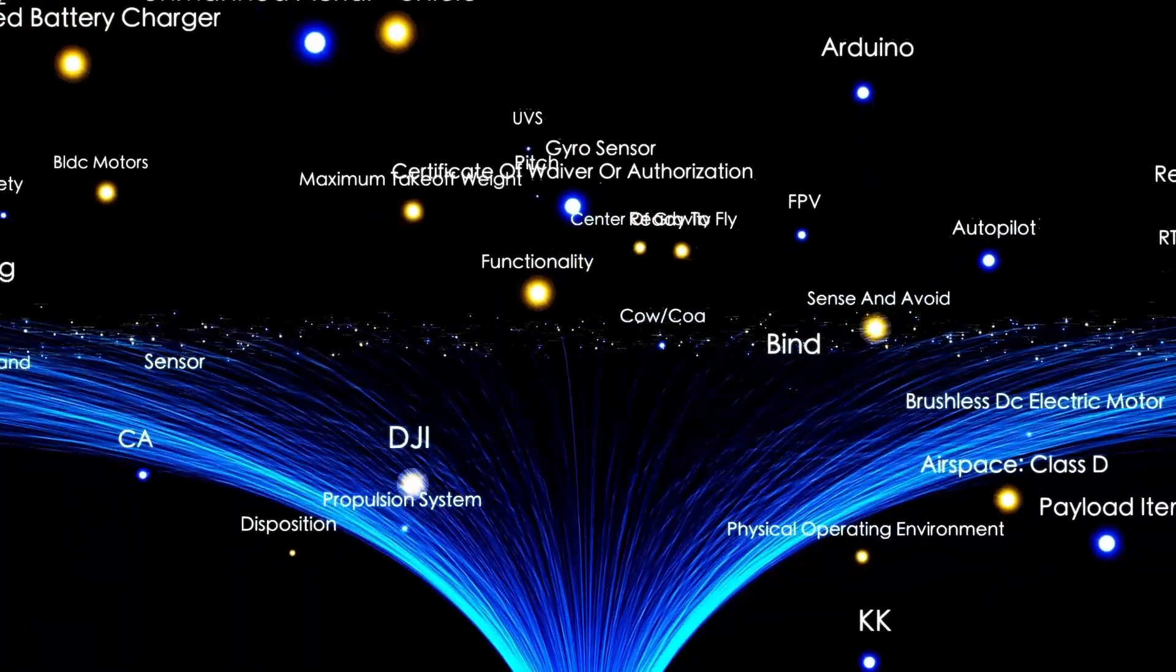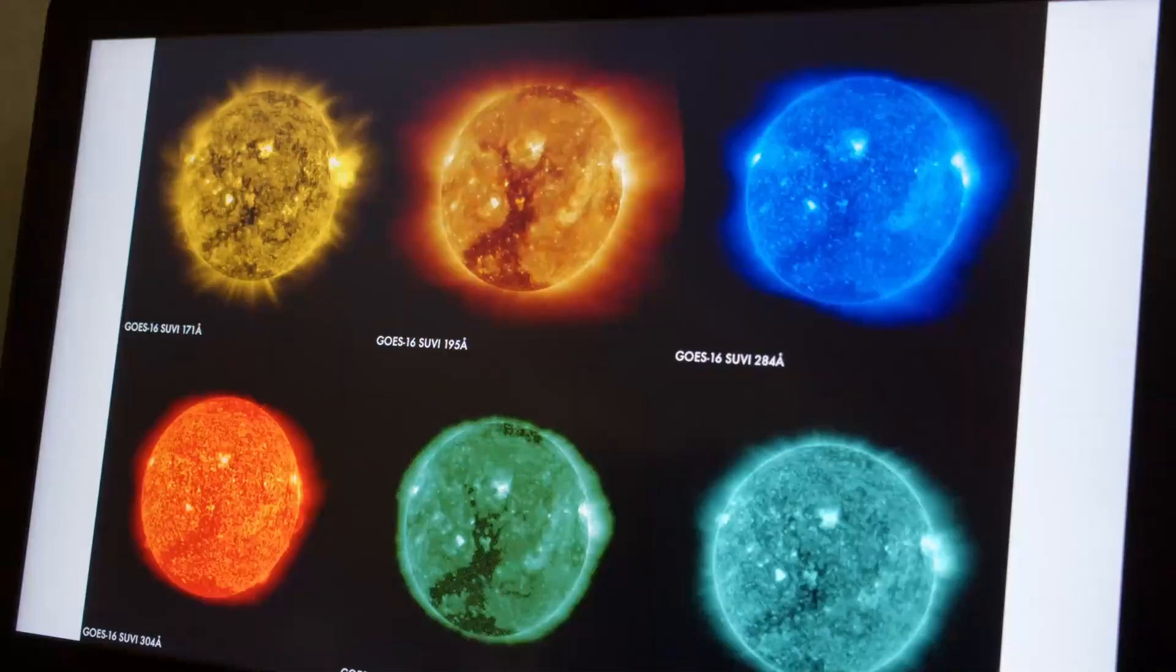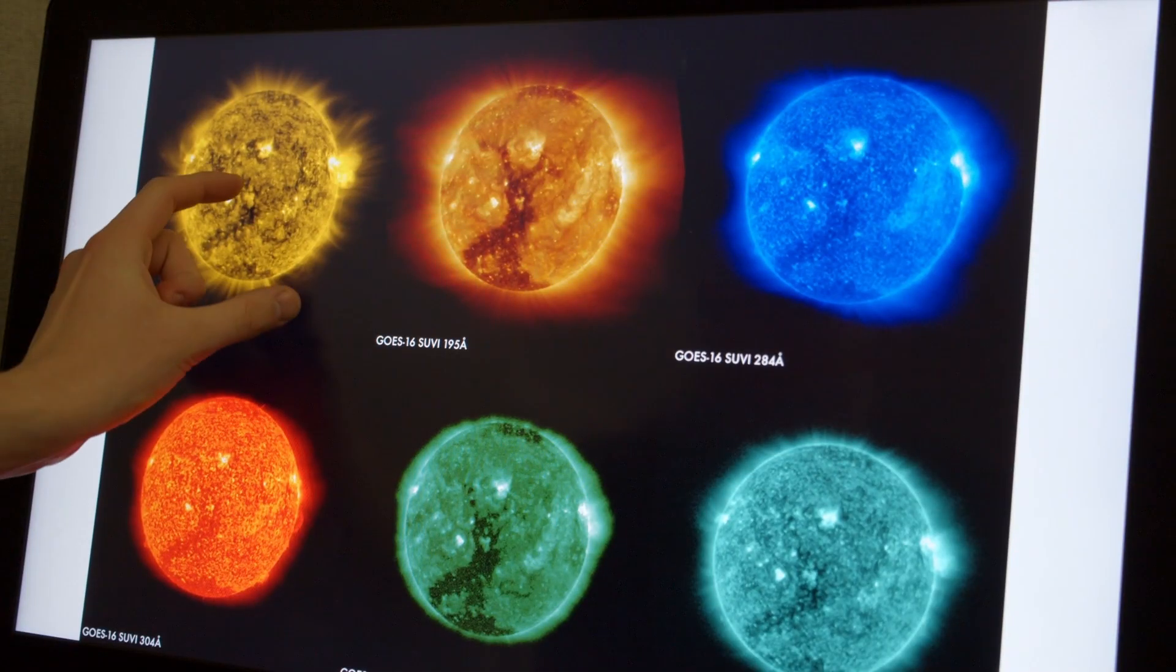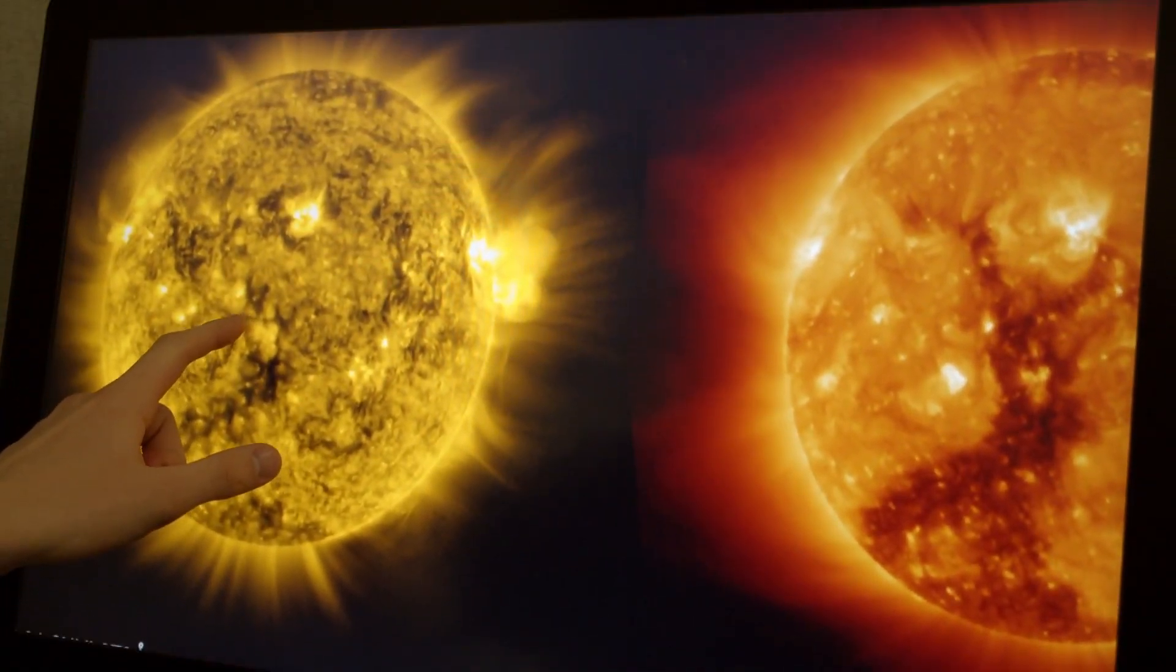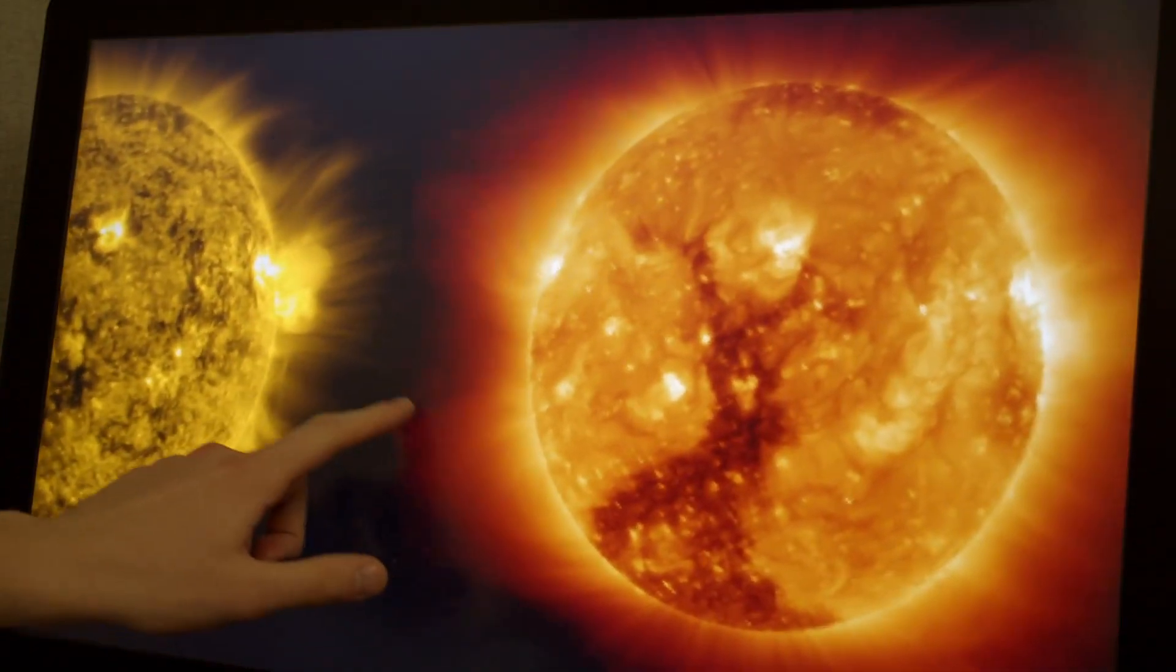But was this an ordinary event for a red supergiant, or did it hint at something far more serious, a signal that Betelgeuse's core was preparing to collapse? To understand the gravity of this event, we need to explore how stars like Betelgeuse function.